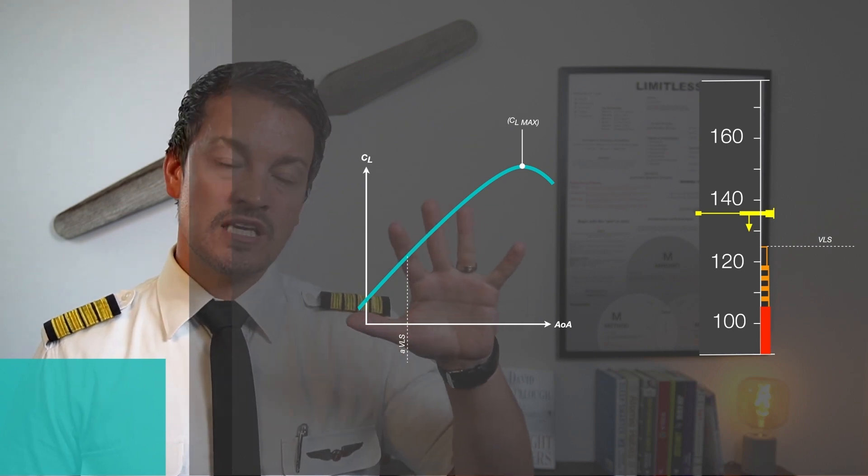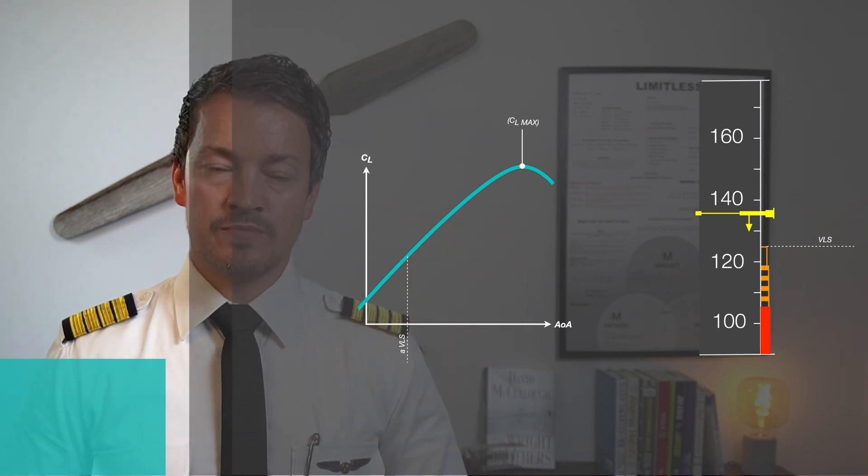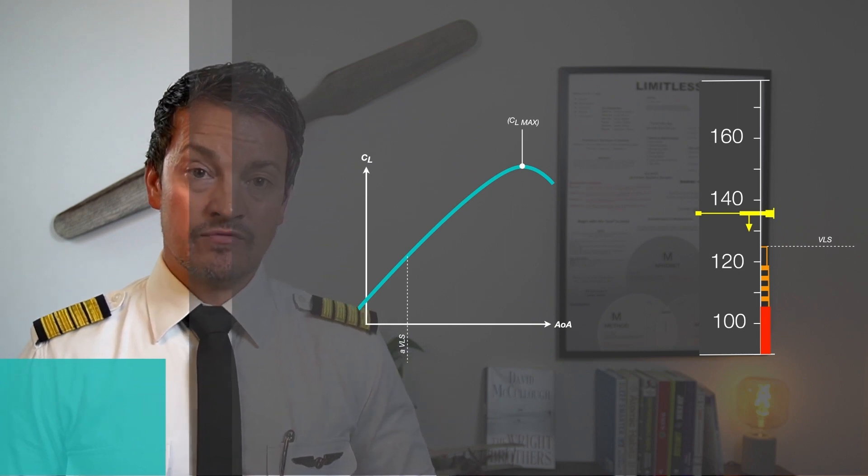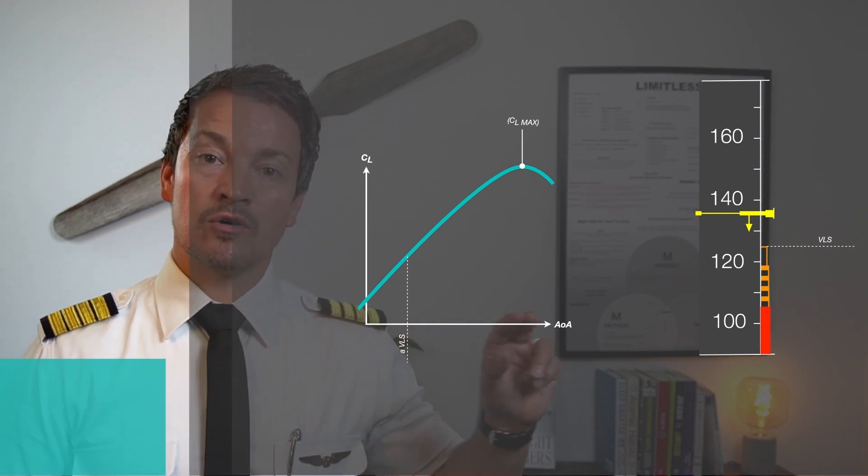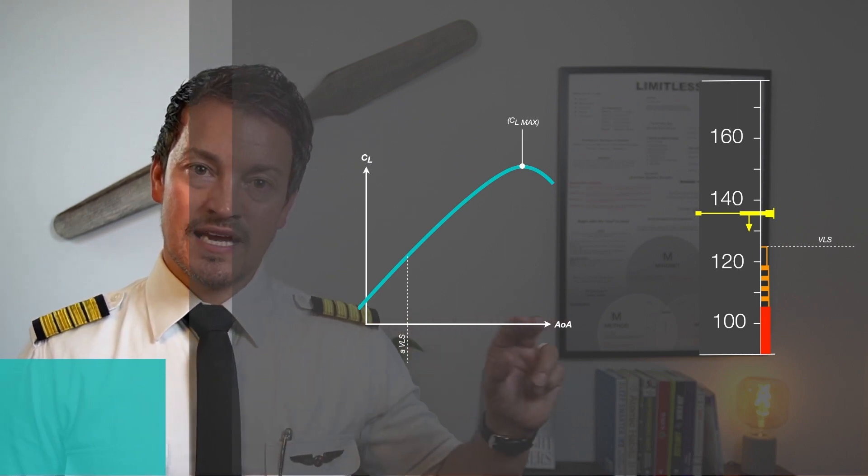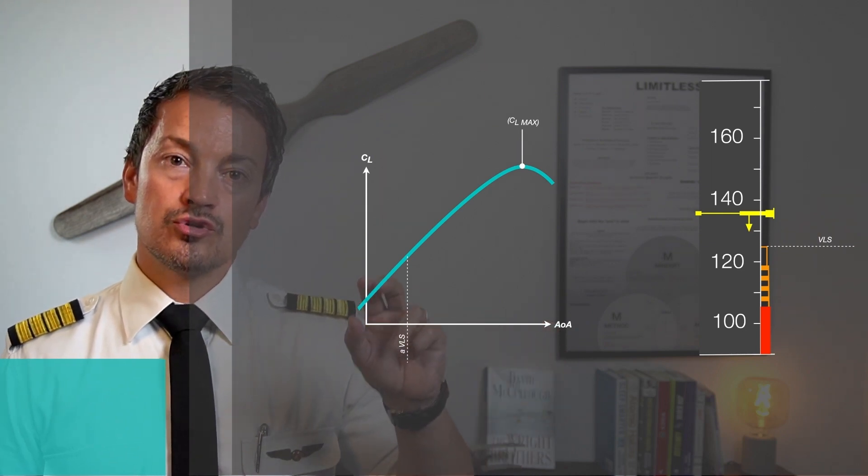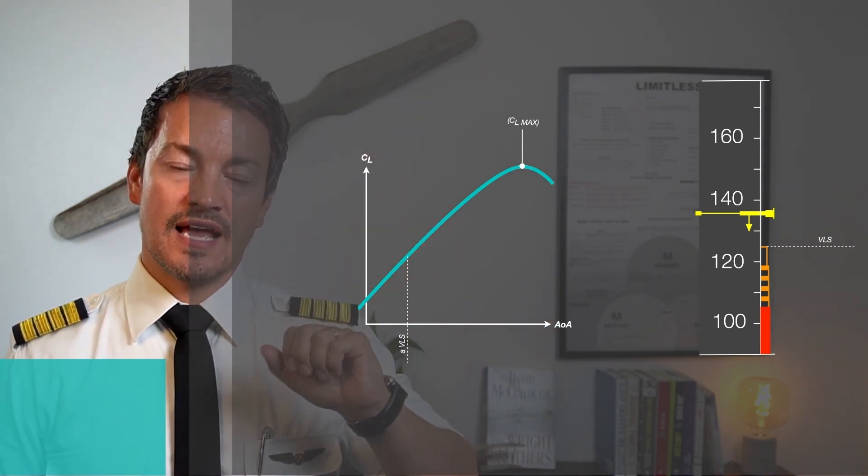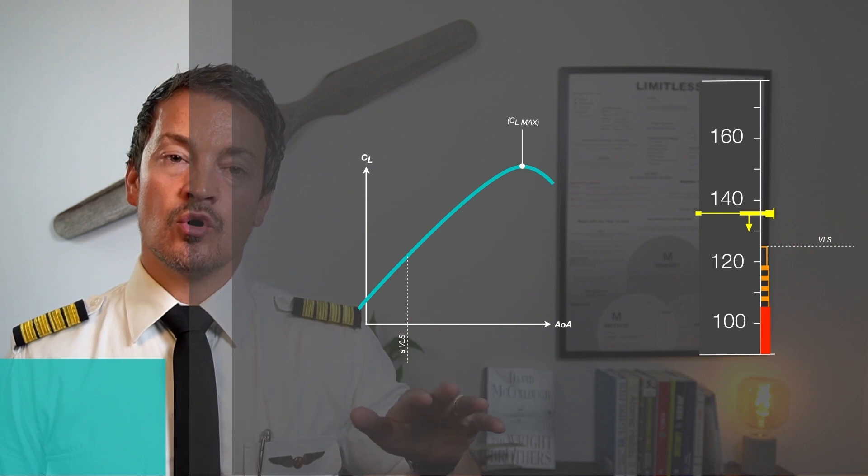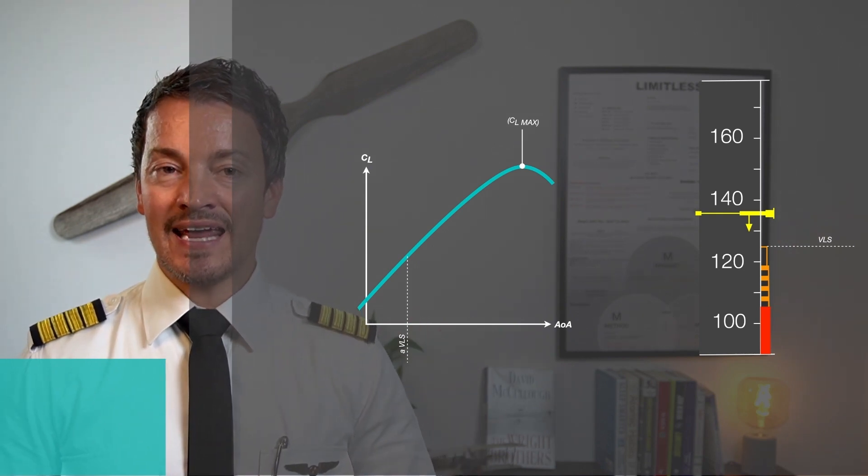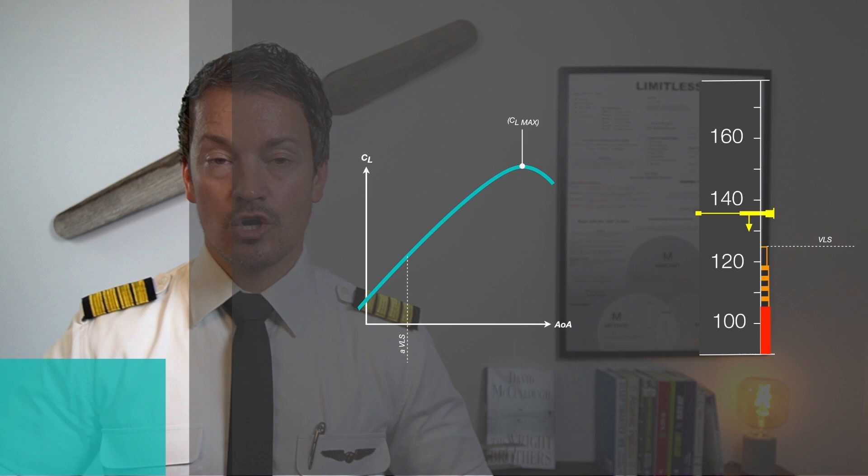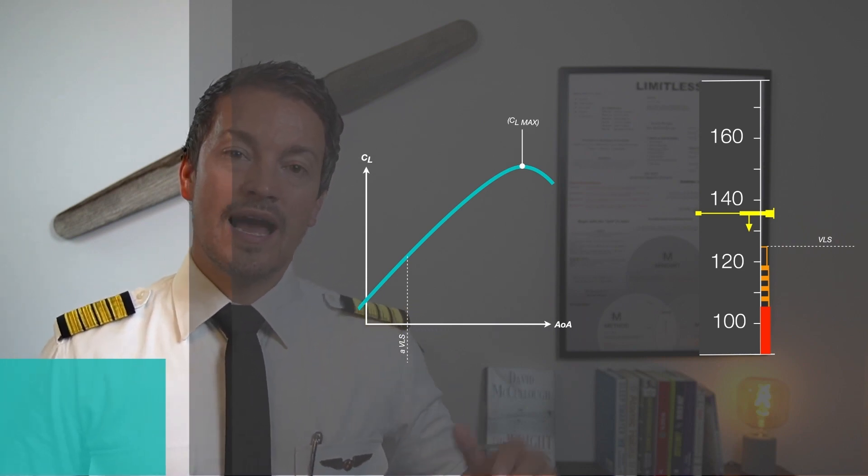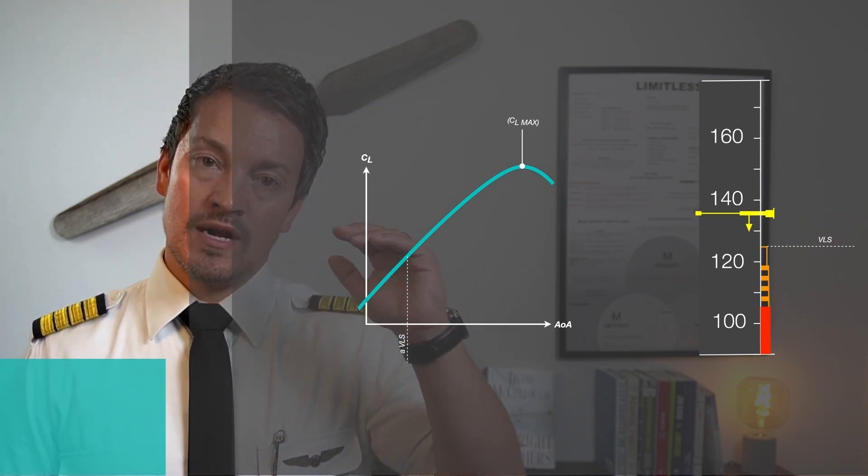This graph you may have seen multiple times during your ATPL theory in principles of flight. It represents the amount of angle of attack to the coefficient of lift. As I'm raising the nose, generating a higher angle between the relative airflow and the chord line over the wing, I will also generate more lift.